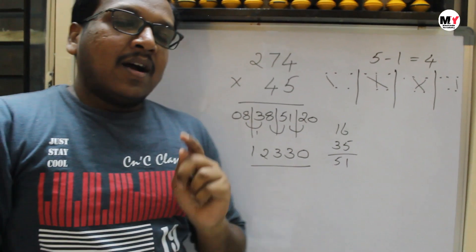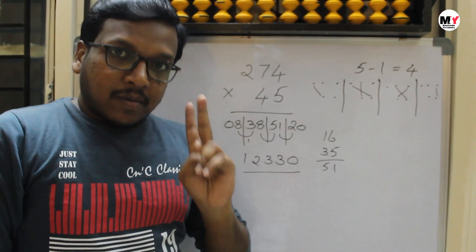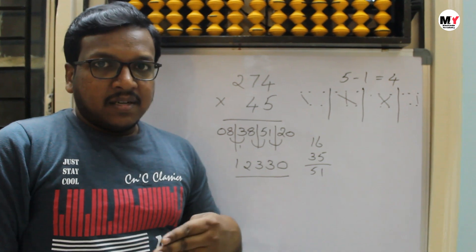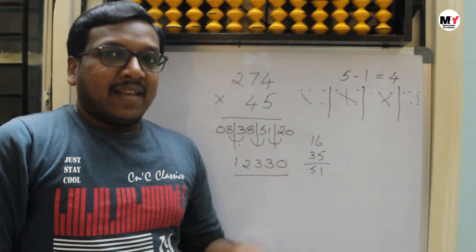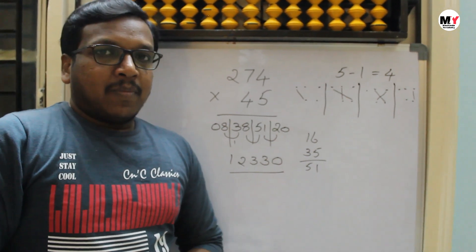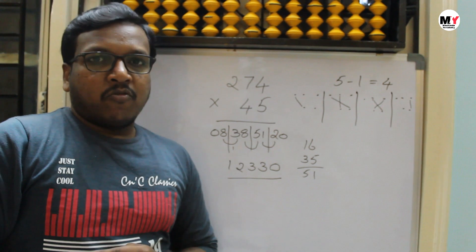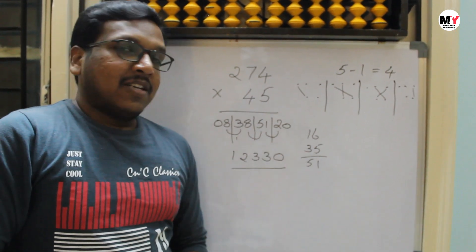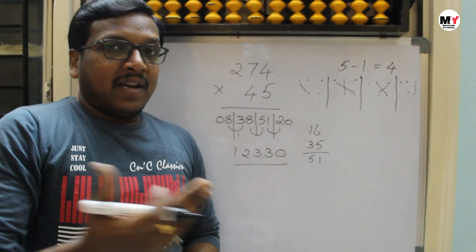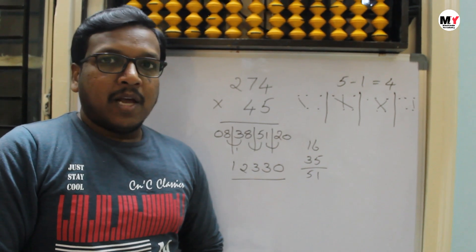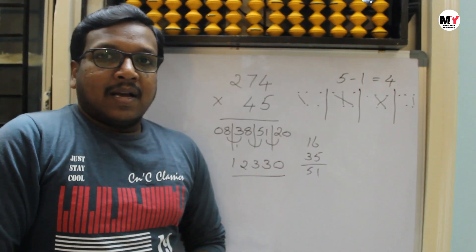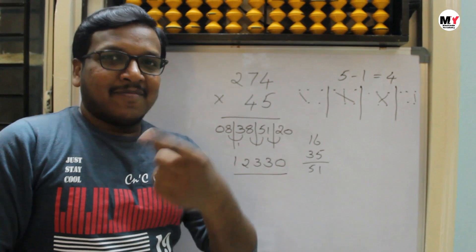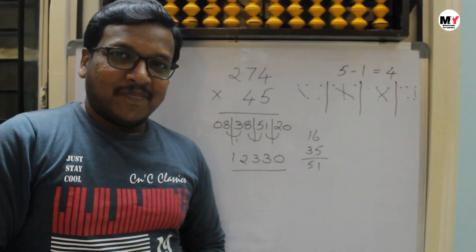I hope everyone has understood. I have taught you double digit into double digit, three digit into three digit, and three digit into two digit. In the next videos, I will explain different ways of multiplication. If you have any doubts, you can leave them in my comment section — I will be helping you out. Thanks for watching this video. Please do subscribe to my channel, Manikanta Initiative. Thank you.